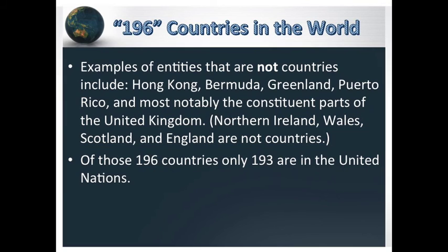We have examples of different entities that are not considered countries, such as Hong Kong, Bermuda, Greenland, Puerto Rico, and most notably the constituent parts of the United Kingdom: Northern Ireland, Wales, Scotland, and England. Those parts are not countries — they are regions that are part of the United Kingdom. Of those 196 countries, we only have 193 in the United Nations.